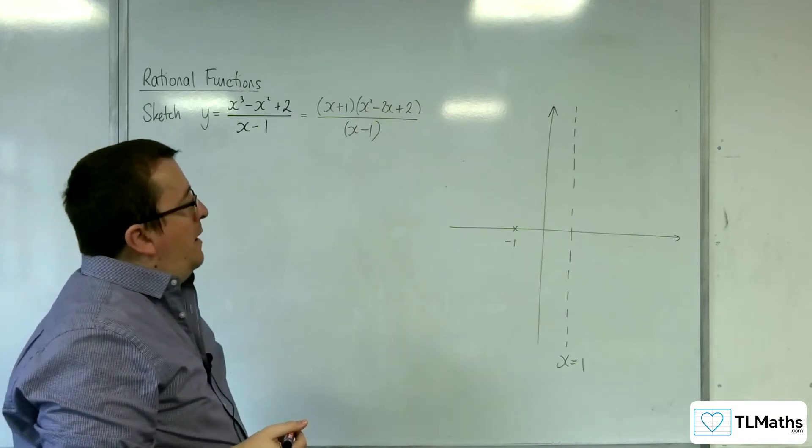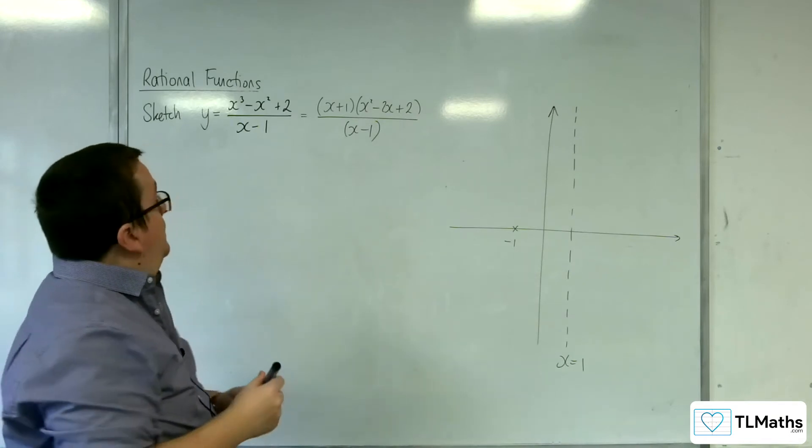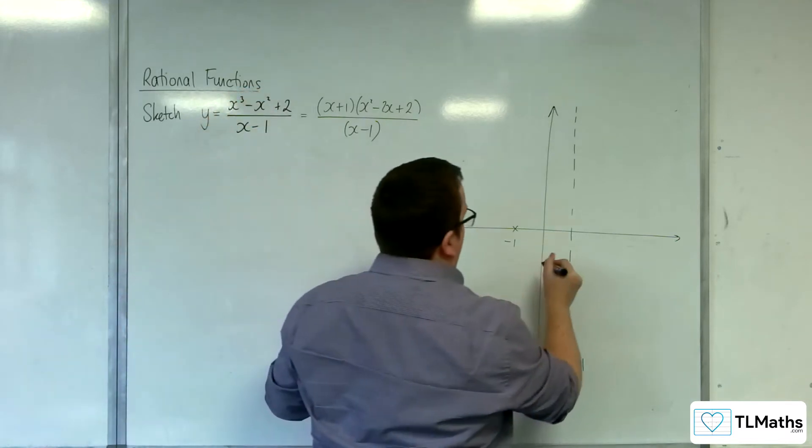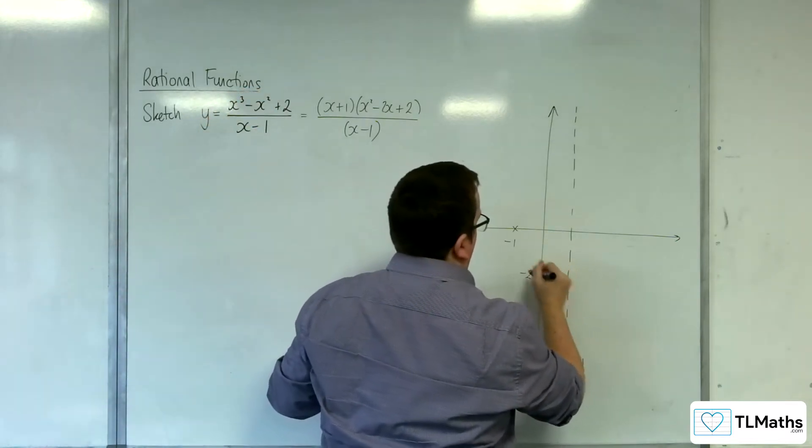What else? So how about where it crosses the y-axis? Now that's when x is 0, so that's going to be 2 over minus 1, so minus 2. So, like that.